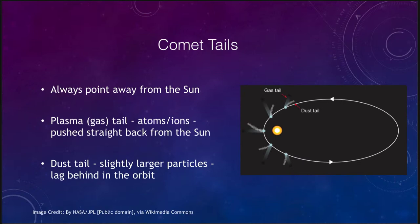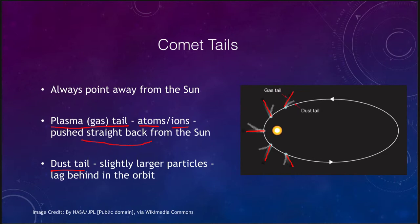There are two types of tails. The plasma or gas tail consists of atoms or ions — atoms with the electrons removed. These are very light particles and are pushed straight back from the sun. The dust tail consists of larger, heavier particles that lag behind the comet in its orbit, curving away and showing the direction the comet is moving. So just by looking at a comet's tails, we can tell the direction of the sun and the direction the comet is moving.